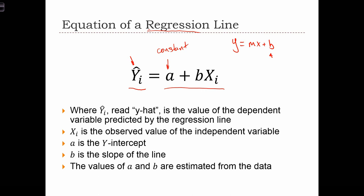We are also going to estimate a statistic called the regression coefficient, which is this b over here, and that b is the slope of the regression line. xi is just an observed value of the independent variable x.